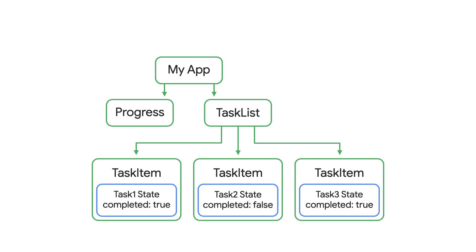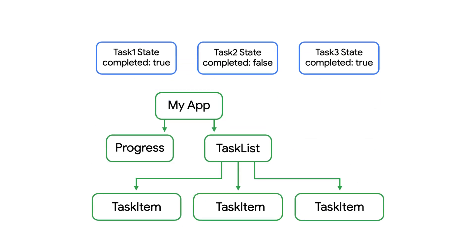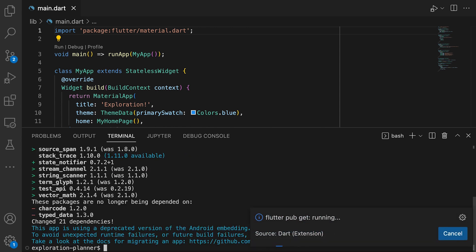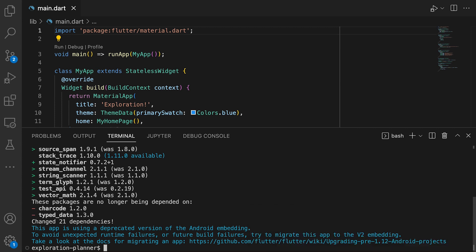Due to time constraints, we'll only be touching on one of Flutter's many state management solutions in this video. For the progress bar to know about the task item states, we'll want to lift the task item states up in the widget tree so that the progress bar has access to the task item state. Let's get some state management into our app by adding the Flutter RiverPod package.